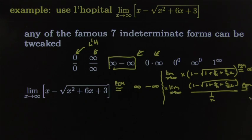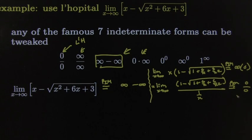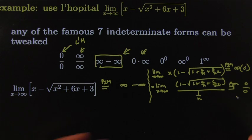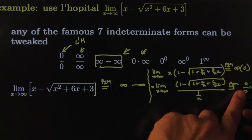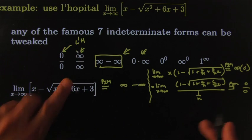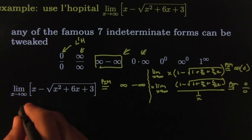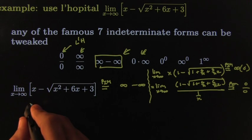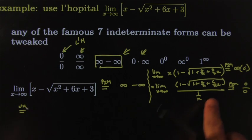That's exactly what we wanted — the 0/0 form — so we can apply L'Hôpital's rule. Now we go on and apply it. I've got to take the derivative of the top and the derivative of the bottom.